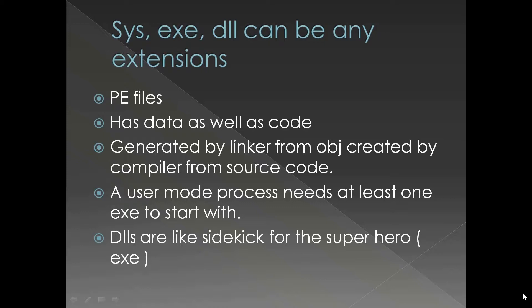Normally binaries are in PE file format and have data as well as code. A binary is normally generated by a linker from the object files created by a compiler from source code — that is where the data and code come into the picture. There is a presentation in the C programming series called 'Compiling, Linking, and Loading' — feel free to refer to that for more information.